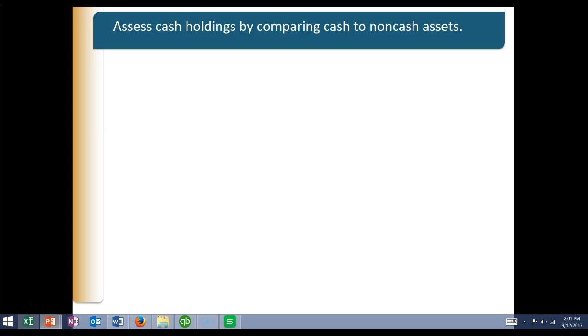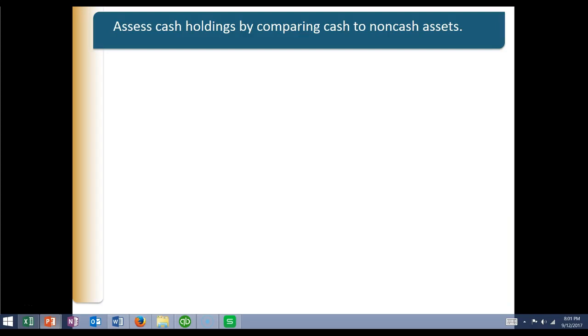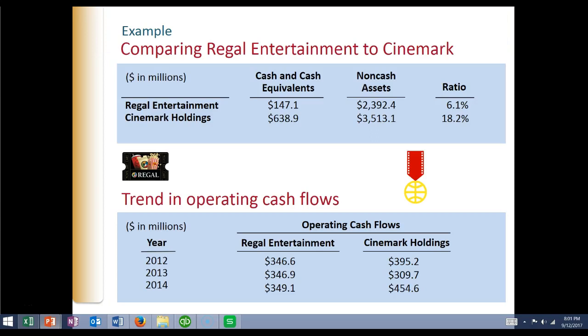We're going to look at cash holdings and compare cash to non-cash, looking at Regal Entertainment versus Cinemark. Regal Entertainment shows cash and cash equivalents of $147.1 million, with non-cash of $2,392 million, so their cash in relation to non-cash is 6.1%. Cinemark has $638.9 million in cash and non-cash of $3,513 million, so their cash to non-cash ratio is 18%.